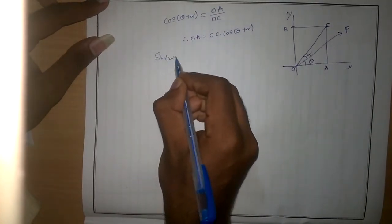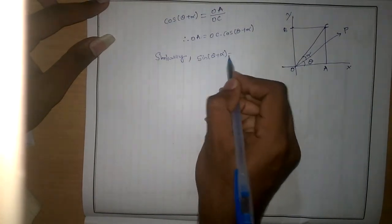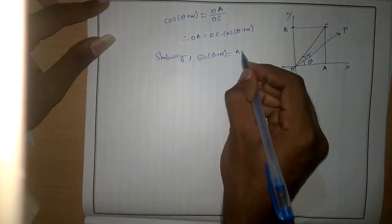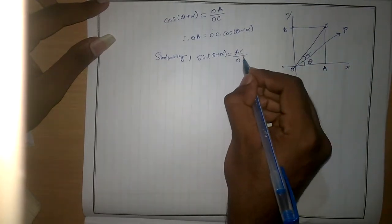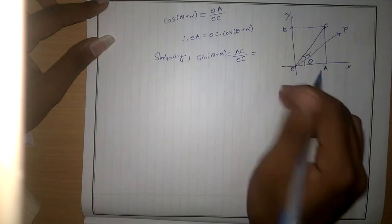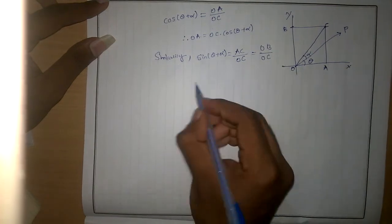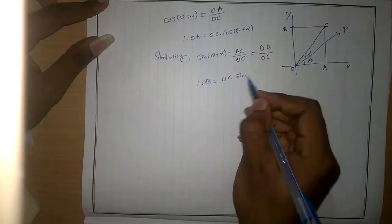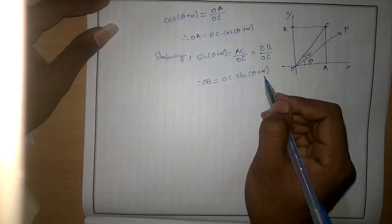Similarly, sin of (theta + alpha) equals the opposite side AC by the hypotenuse OC. Here AC equals OB, so OB = OC · sin(theta + alpha).